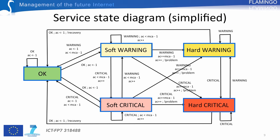Consider a simple scenario where a service is in an OK state. If the check returns a critical result, the diagram moves to a soft critical state and the attempt count is incremented. This state is not a confirmed state — several checks are required before reaching the hard critical state. In this scenario, the max check attempt is set to 4, meaning three additional checks with a critical value are required before reaching the hard state.